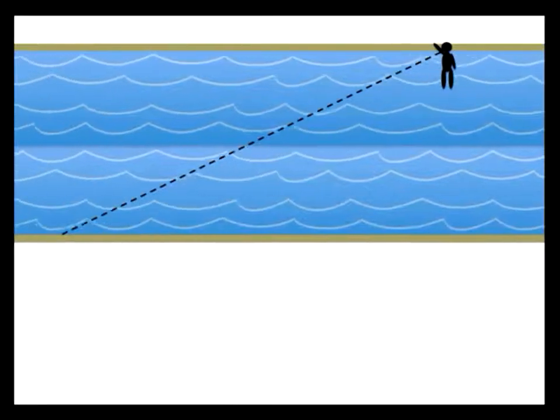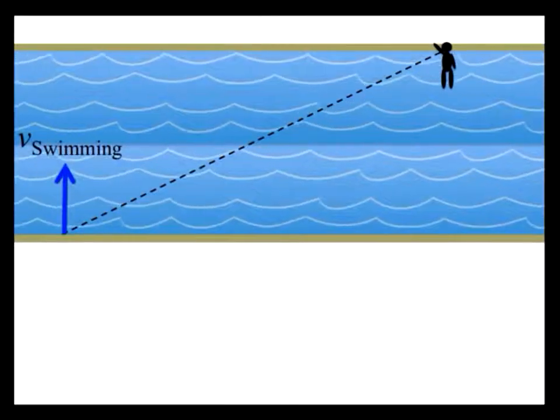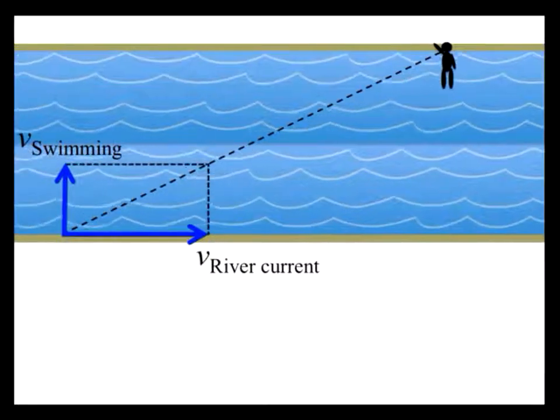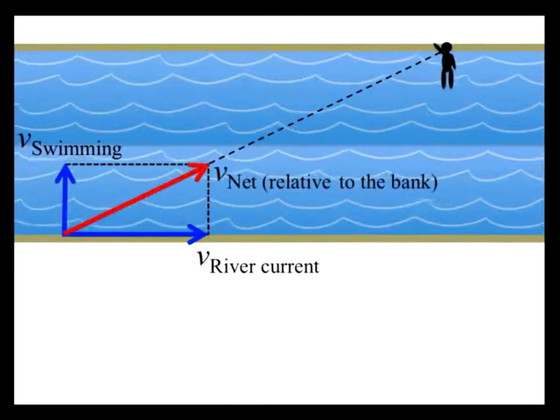Here we see your net velocity vector relative to the river bank will be equal to the vector sum of your swimming velocity, which is perpendicular to the river bank, and the river's current, which is parallel to the bank.